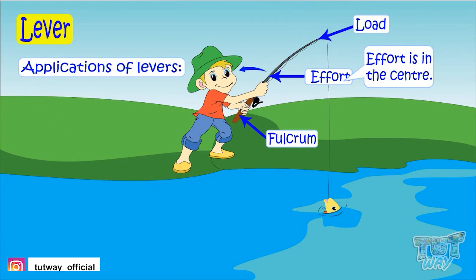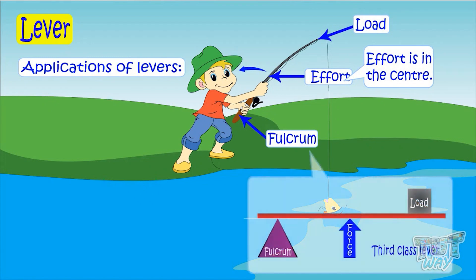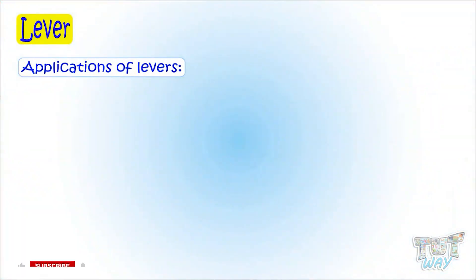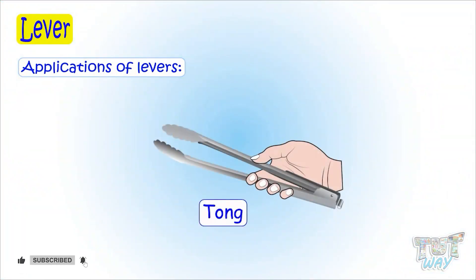Here effort is in the center, and we learned that third-class levers have effort in the center. So the fishing rod is an example of a third-class lever. Let's have another example — here we have a tongue. It's a lever; let's see how and which type.